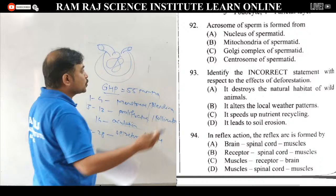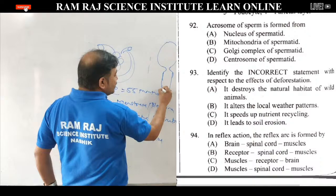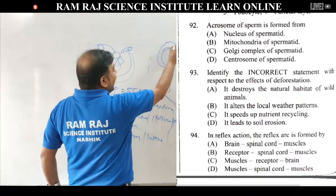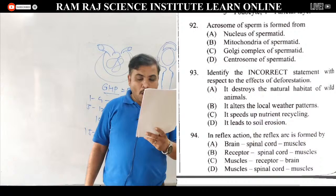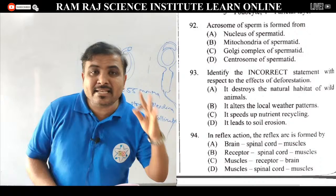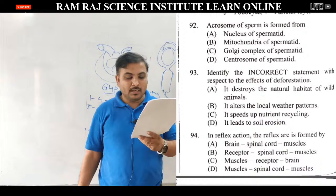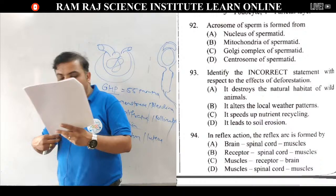Question 92: acrosome of sperm is formed from. Sperm structure में head, neck, middle piece और tail होते हैं. Head में large nucleus होता है और उसके ऊपर cap-like structure called acrosome जिसमें enzyme hyaluronidase होता है. Acrosome is produced from Golgi complex of spermatid. तो answer है Golgi complex of spermatid.